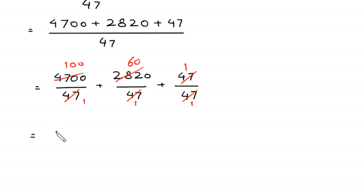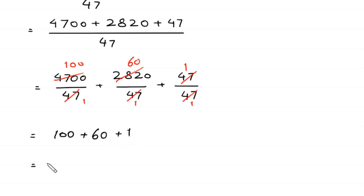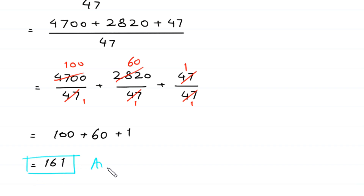This gives 100 plus 60 plus 1, which equals 161. This is the final answer, and this is the simplest form.